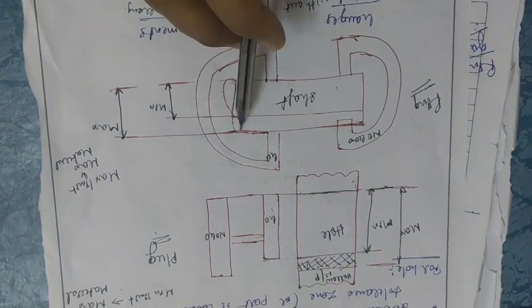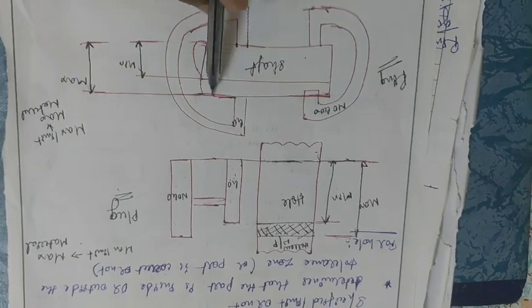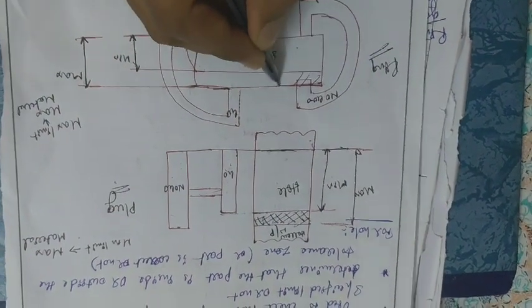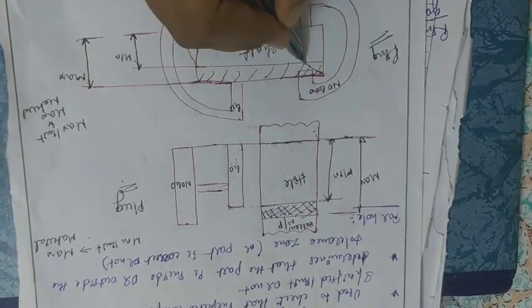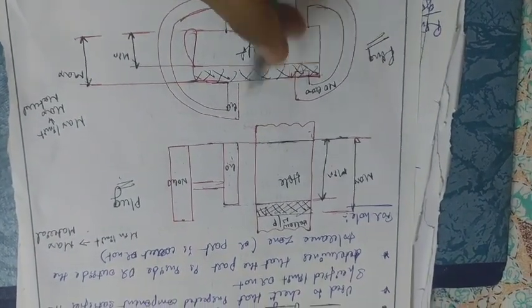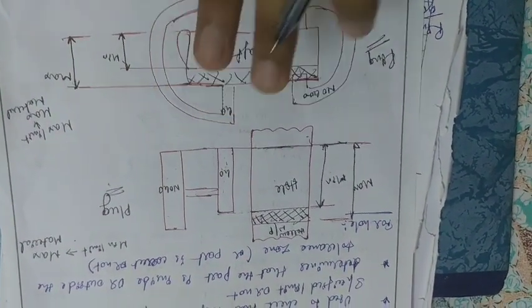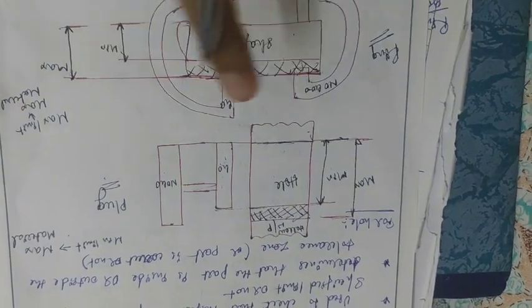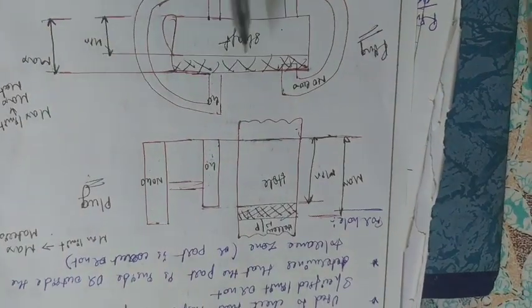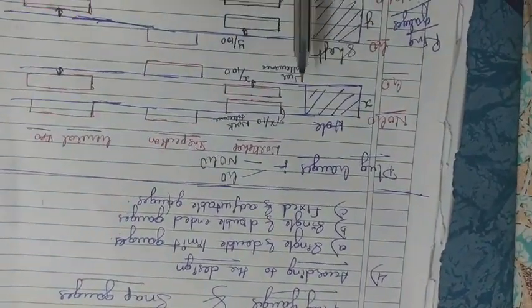For the shaft, at the maximum limit the go gauge can move easily with the shaft, and for the no-go side it is not possible to move at the maximum limit side. By using these two types of gauges we can easily find out which parts are within limits and which are not.